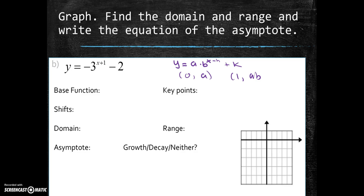Let's do the next one. What is the base function? The base function is y equals negative 3 to the x. Because it's the same thing, but no pluses, no minuses. Key points? The key points is going to be 0, a. But I don't really see an a. However, that negative sign is telling me something. It's like y equals negative 1 times 3. Thank you for writing that for us, because now we can see the a and the b clearly. So my key point would be 0, negative 1. And the other one would be 1, negative 3. Because negative 1 times 3 is negative 3. Those are key points.